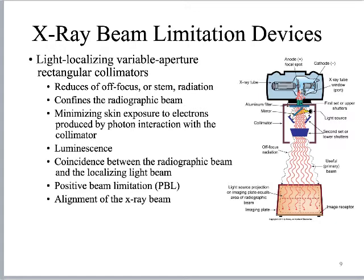The collimated light field should correspond to the area of the actual x-ray beam to within 2%. Positive beam limitation devices (PBLs) are required for all x-ray machines made since around 1980. A PBL automatically limits the light field to match the image receptor size — if you set up for a hand x-ray, the field matches the size of a hand x-ray. Any override to open the field beyond that requires turning a key or disengaging an interlock. I experienced this as a student: I couldn't get the light field to open up because I was at the wrong SID — once I corrected it, everything aligned.